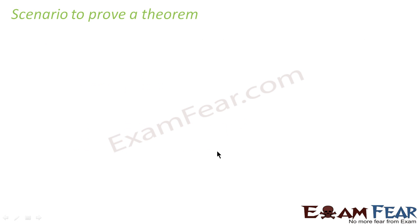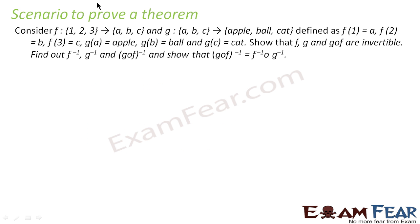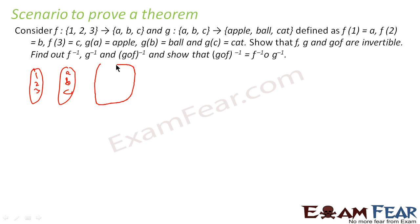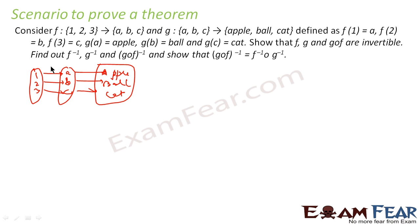We will take one example. There is a function f with values from {1, 2, 3} to {a, b, c}, and a function g from {a, b, c} to {apple, ball, cat}. f(1) = a, f(2) = b, f(3) = c. g(a) = apple, g(b) = ball, and g(c) = cat. This is f and this is g — both are given.